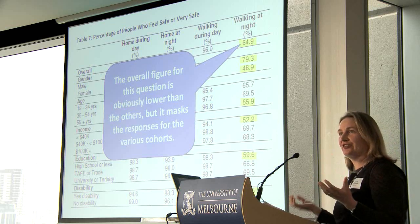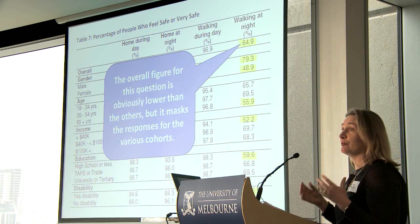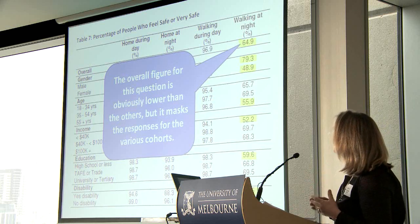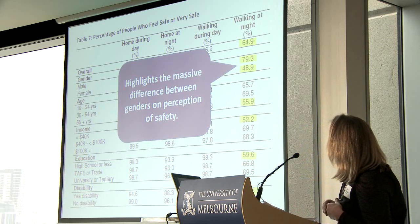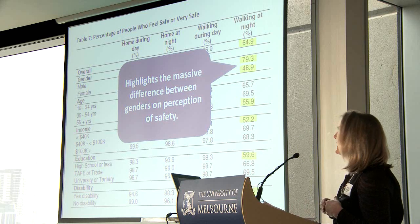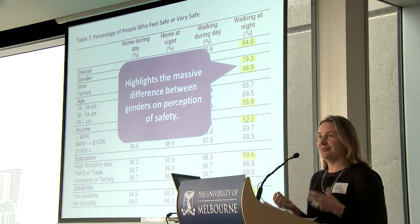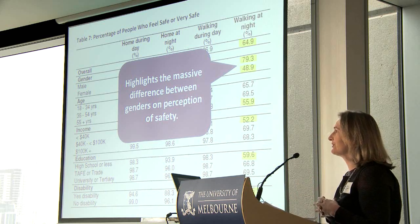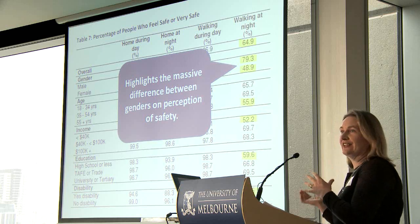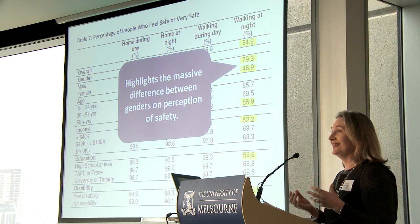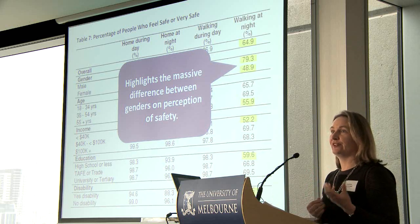That figure does mask a lot more detail. With our bigger sample size, we can look into differences of gender, age, income, education, and disability. Looking at gender, nearly 80% of males feel safe, while only 50% of females feel safe or very safe walking at night. We actually took this information to our strategic planning day for our community safety action plan, which is about to be renewed. Perceptions of safety are a real fear for people, and we can really unpack that and deal with the cohorts feeling most at risk.